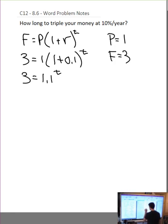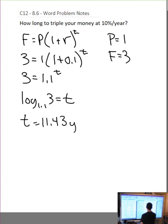Then I can change to log form. So the base of the logarithm is the base of the exponent, and the exponent is the answer. So I could type that in my calculator, math alpha math, and I will get 11.43 years.